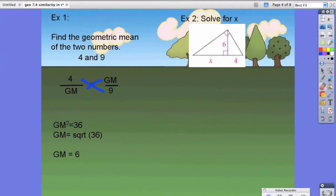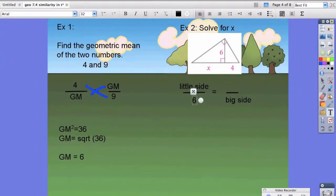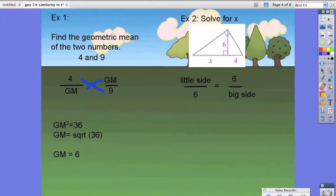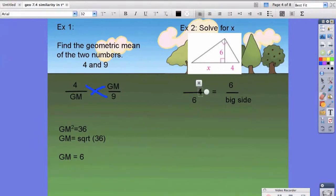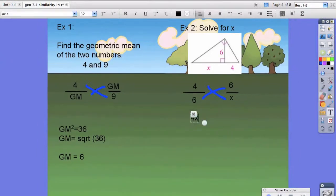We're going to do the same exact thing for example 2. Notice that our geometric mean here is going to be 6, so we're just going to fill in the blanks. The little side touching 6 is going to be 4. And the big side touching 6 is x. Notice the 4 and the x are interchangeable, so if you wanted to say it the other way around, that's fine also. We'll take the cross product again. We get 4x equals 36. Divide by 4 to both sides, x equals 9. That's how we solve for the geometric mean.